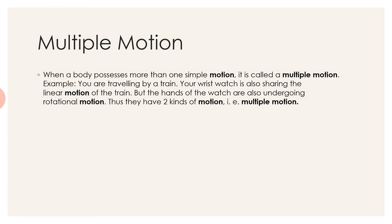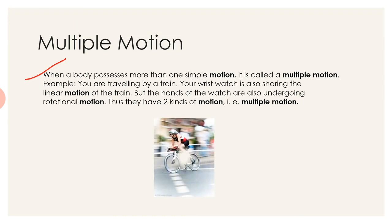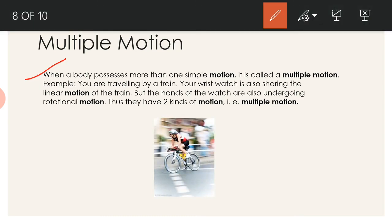The next kind of motion is multiple motion. In multiple motion, a body possesses more than one kind of motion. For example, this bicycle. In this bicycle, we can see the wheels are possessing a rotation and a circular motion. The whole bicycle is possessing a curvilinear motion as it moves around a curvilinear track. The wheels and handles and everything of the bicycle as a whole is following three kinds of motion.